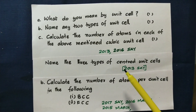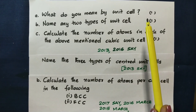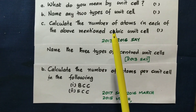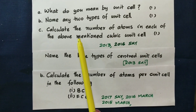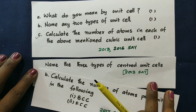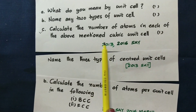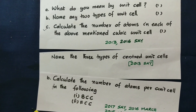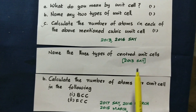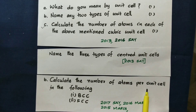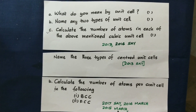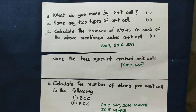It is important to study the question: what is a unit cell? It is the smallest repeating unit in the crystal lattice. There are two types of unit cells — primitive and centered. The centered types are BCC, FCC, and end-centered. Next we have to calculate the number of atoms in each type of unit cell.